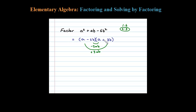We should always check our last term: negative 2b times positive 3b is negative 6b squared — so it checks out and this is the correct factorization. I always like to erase the scratch work because at some point we should be able to do that in our head. So the original trinomial is factored, just like that.